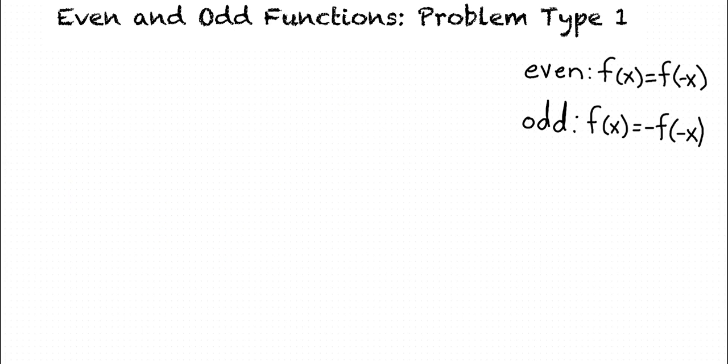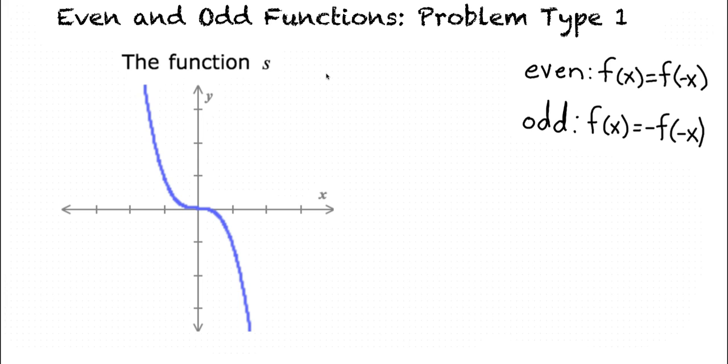How can we tell if a graph is odd? Let's look at the function s. If this function is odd, then s(x) must equal negative s(-x). Let's test this by choosing a value of x, then finding s(x), which is right here. Now, let's test to see if that equals negative s(-x). Negative x would be right here. And so, s(-x) is this value, which is the negative of our original value of s(x). So, s(x), which is this value, is in fact equal to the negative of s(-x). These are opposites of each other, and this means that the function is odd.